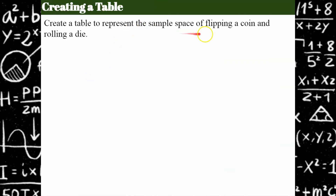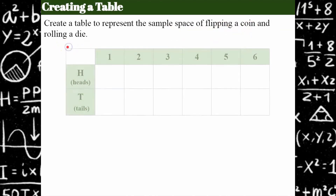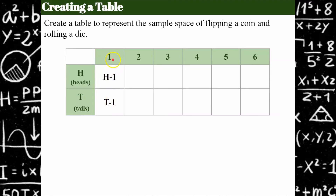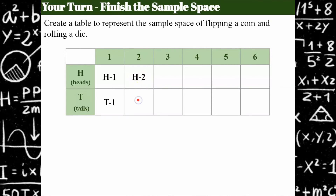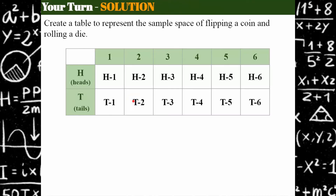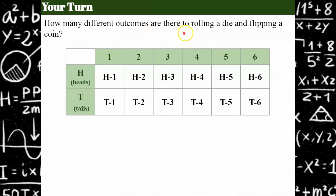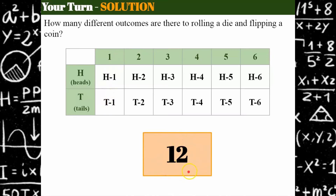Let's create a table to represent the sample space for flipping a coin and rolling a die. I can get heads and roll a one, tails and roll a one, heads and a two — and I'm going to ask you to finish the sample space. Go ahead and pause, finish it out, and come back to check your work. Welcome back. Here is the whole completed sample space in an organized table. I want you to tell me how many different outcomes there are to rolling a die and flipping a coin — the sample space is 12, with 12 different cells in our table, each one a different outcome.